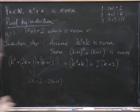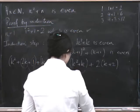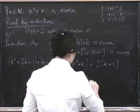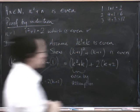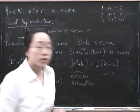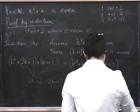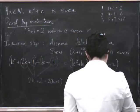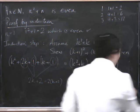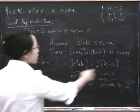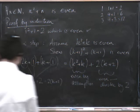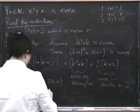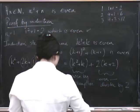So this is the same as that. I hope you can see. But look, this part is even by assumption. This part is even because it's 2 times something, it's divisible by 2. And we know that if we add something even with something else even, then the result is definitely even. So the right-hand side is even. Hence, the result is true for k plus 1.